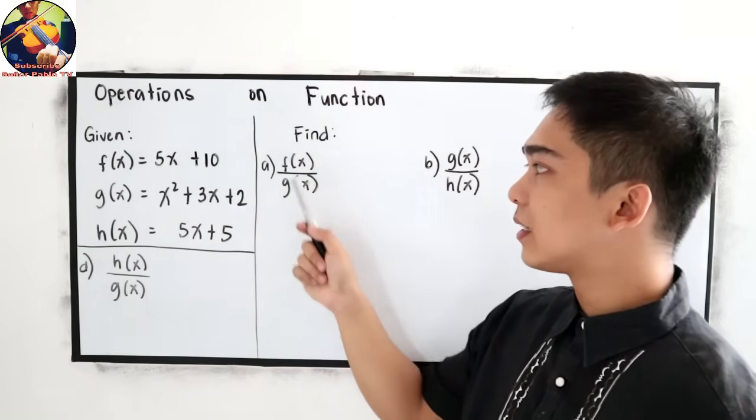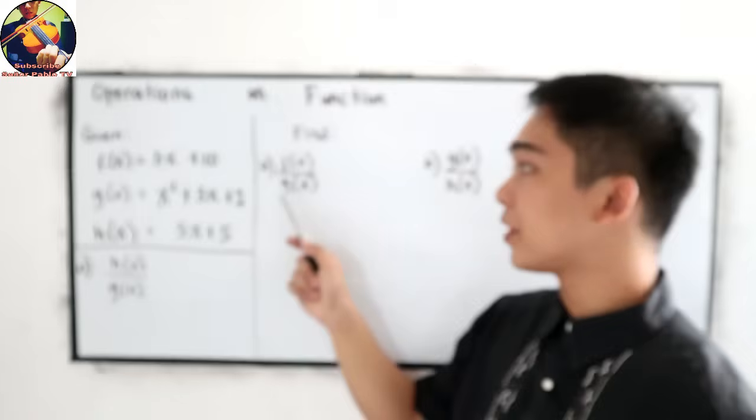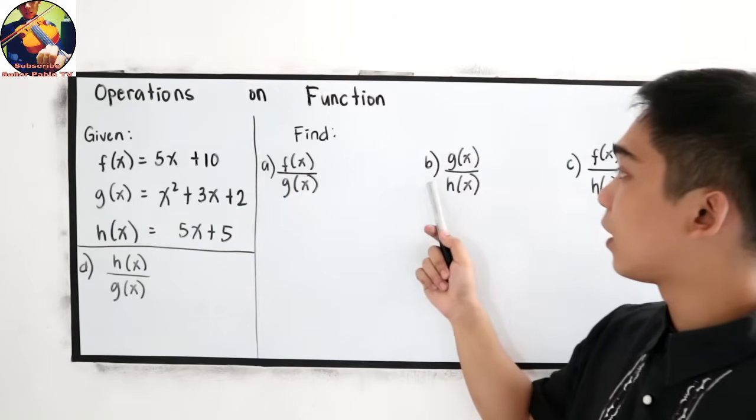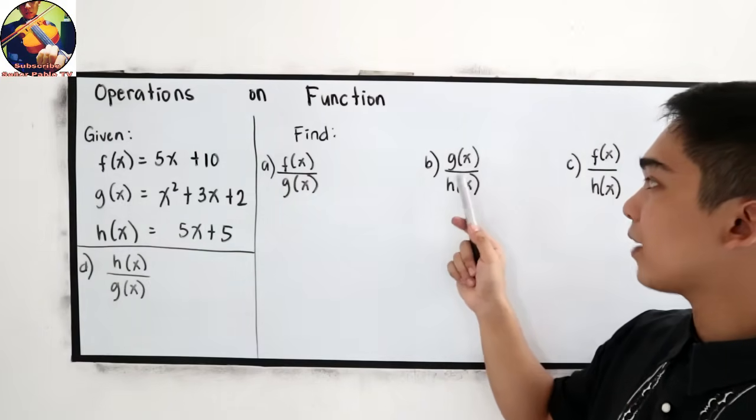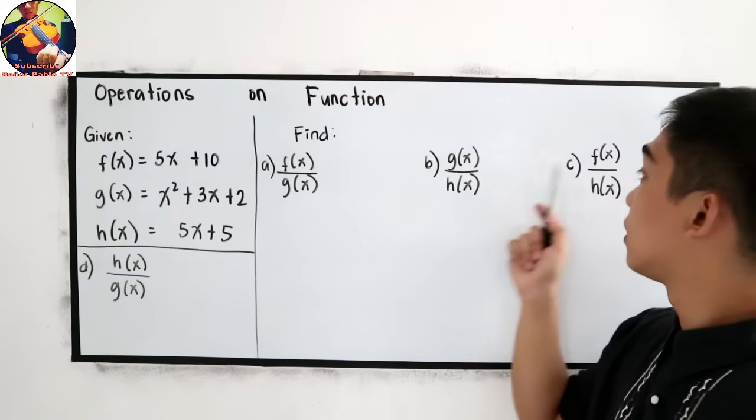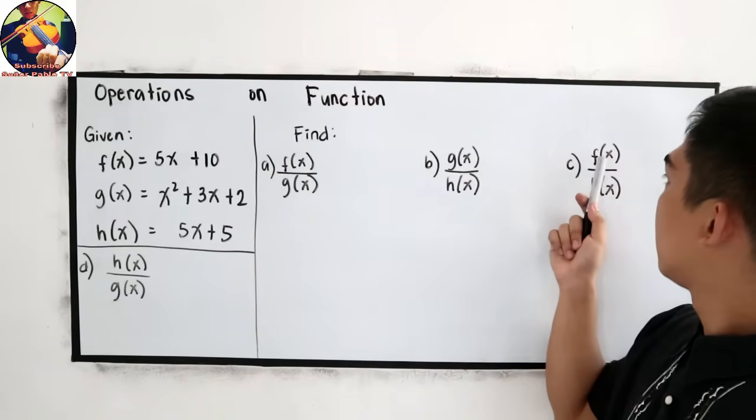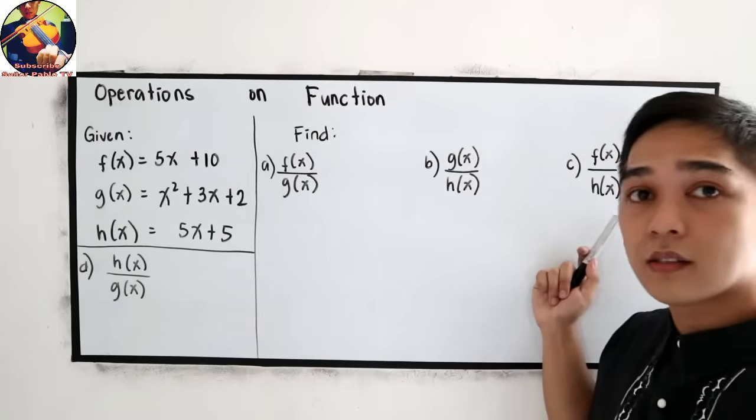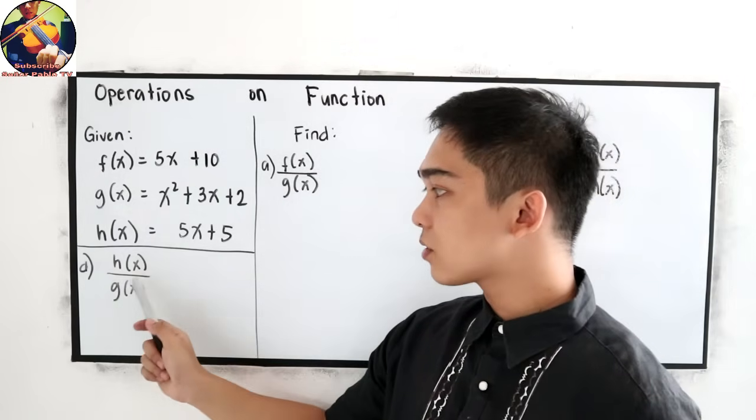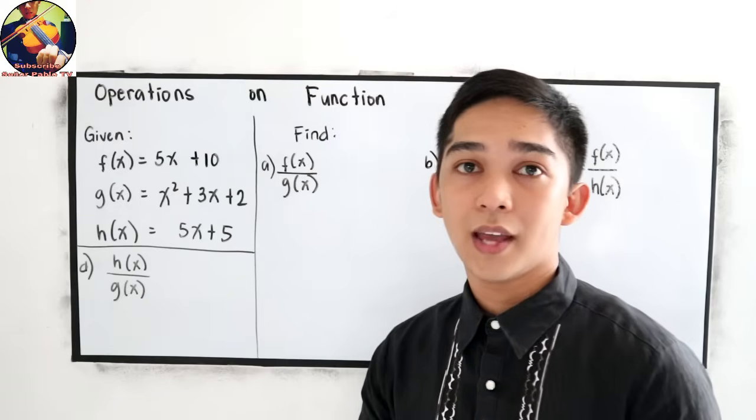We are going to find: letter A, f of x over g of x; letter B, g of x over h of x; letter C, f of x over h of x; and letter D, h of x over g of x.